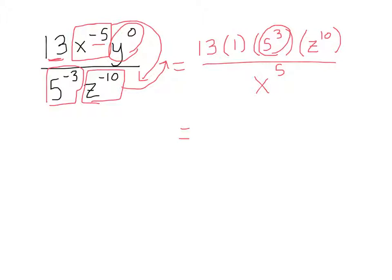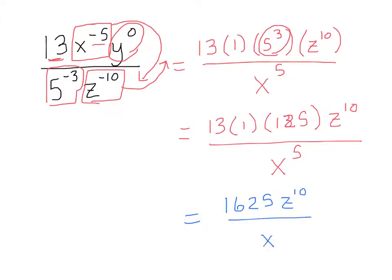And so I've got 13 times 1 times 125 times z to the 10th, and that's all over x to the 5th. And now what we need to do is we need to multiply 13 times 1 times 125, and you tell me what that is. And so you've got 1,625 z to the 10th power over x to the 5th power, and that's your final answer right there.